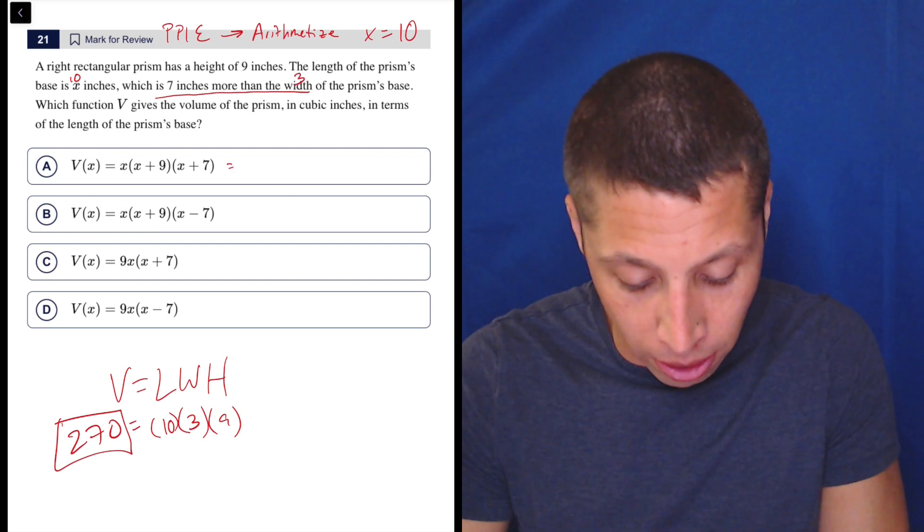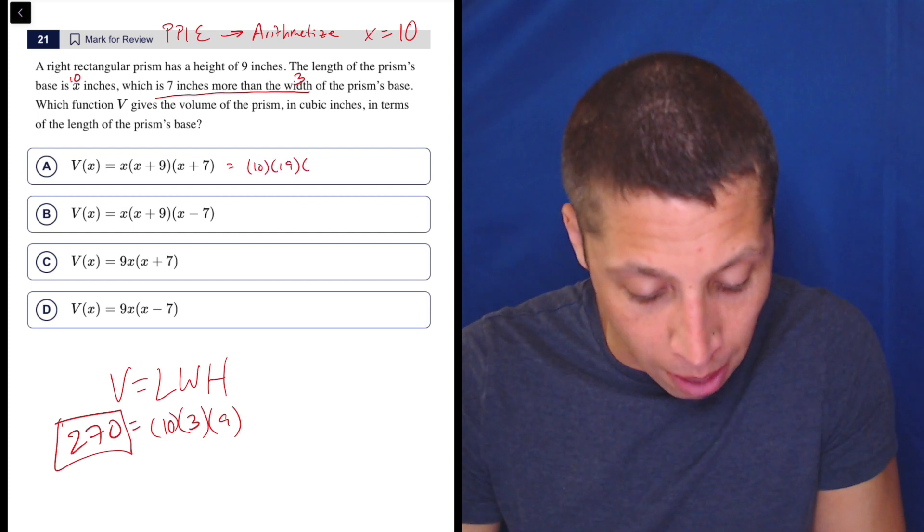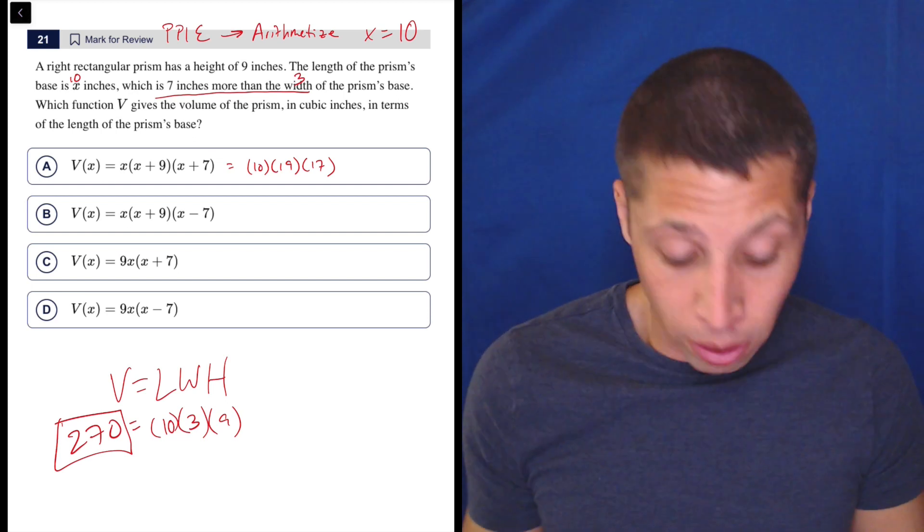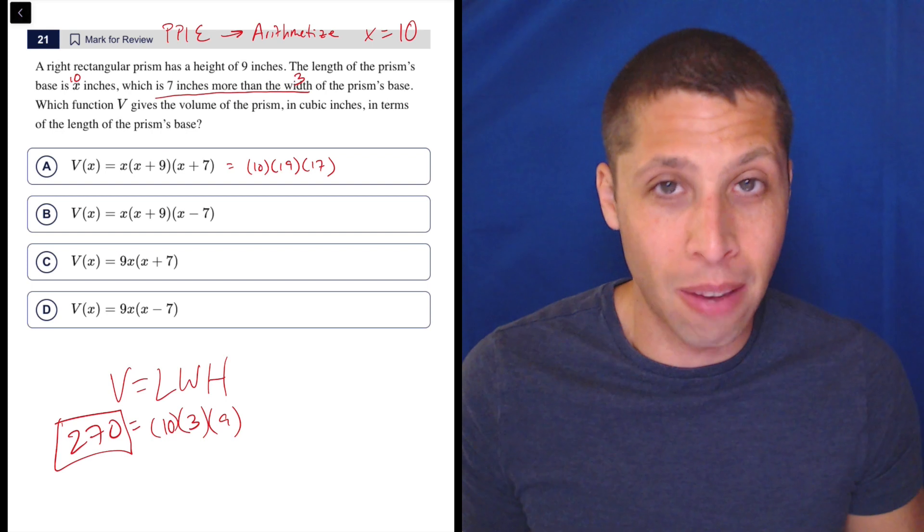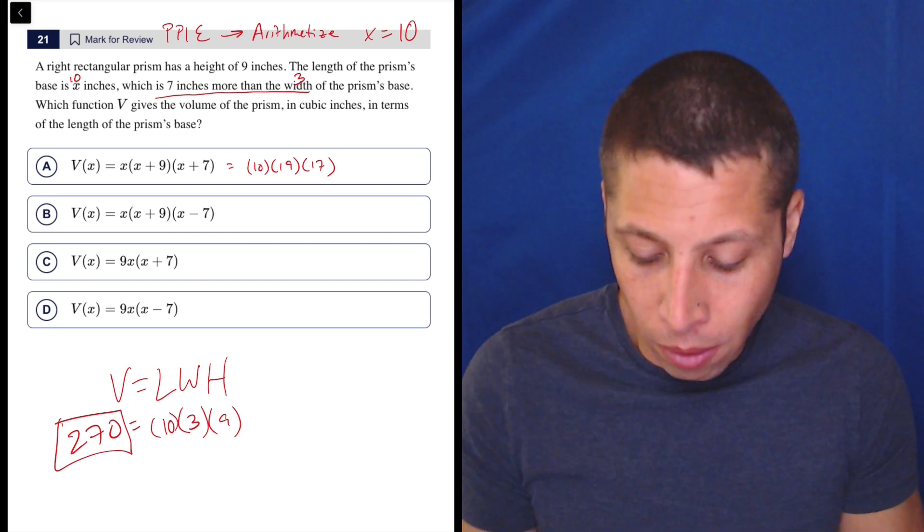So I would just go to choice A. I would say, okay, X was 10. So 10 times 19 times 17. Well, I don't need the calculator to know that that's crazy big, right? That's way more than 270, because already 19 times 17 is going to be in the thousands, I think. So we're already too big.